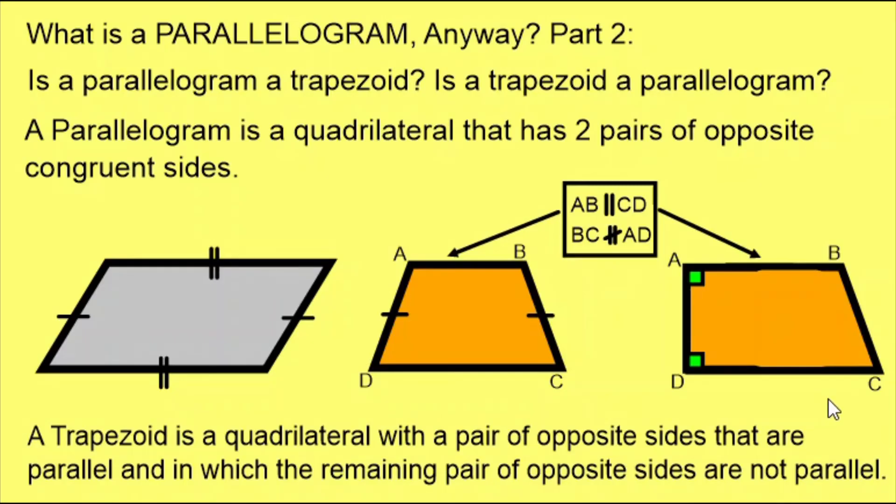Warning, this is the North American definition for a trapezoid. Other parts of the world use a different definition and that makes the conclusions of this video change. But following the North American definition, both of these orange trapezoids are following all of these rules and therefore they are indeed trapezoids. In order to be sure of that, we needed that extra information in the box.